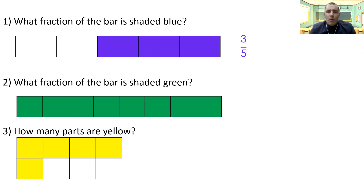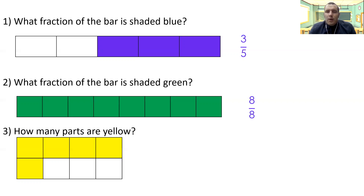Number two: what fraction of the bar is shaded green? We need to be careful here — this is one of the questions where I said read the question carefully. The fraction of the bar that's shaded green is eight eighths. The bar's been divided into eight and it's asking us for a fraction. So if you've written one, I'm very sorry that you're incorrect, but it's about reading the question carefully.